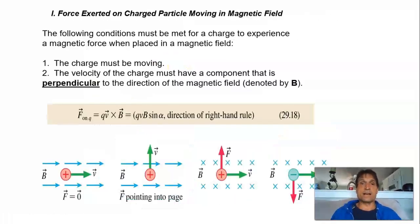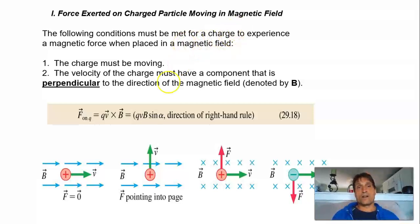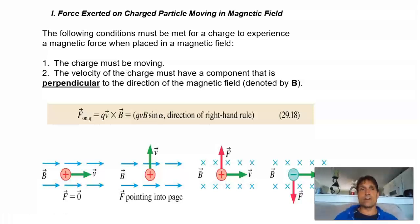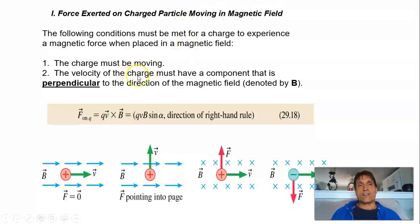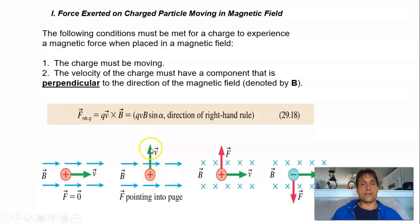Now what about charges moving in magnetic fields? It's experimentally determined that first, for a charge to experience a magnetic force, it has to be moving — this is different than electric forces. Second, the velocity of the charge must have some component perpendicular to the field. For example, if you have a charge moving in the same direction as the field, it will not experience a force. If the charge is moving perpendicular to the field, it will experience a large force.